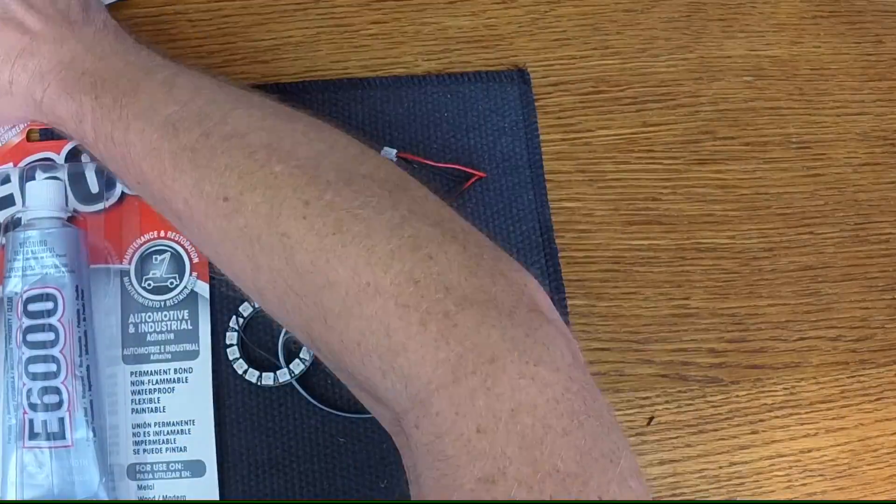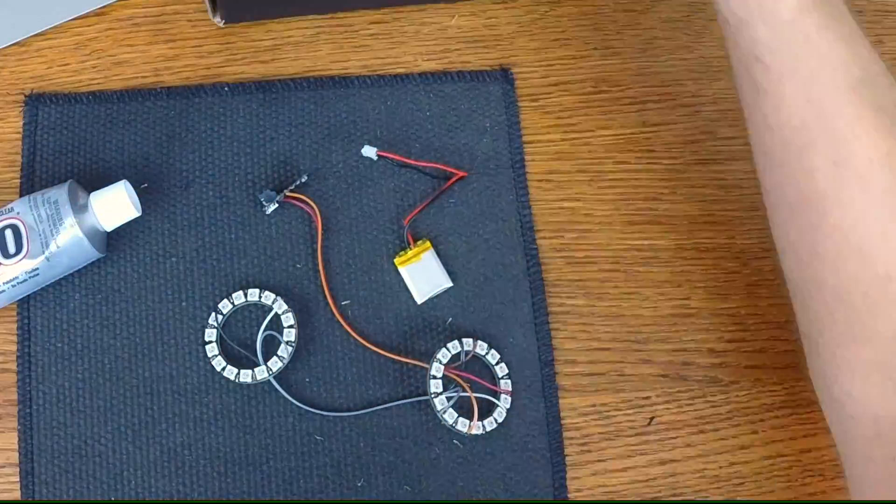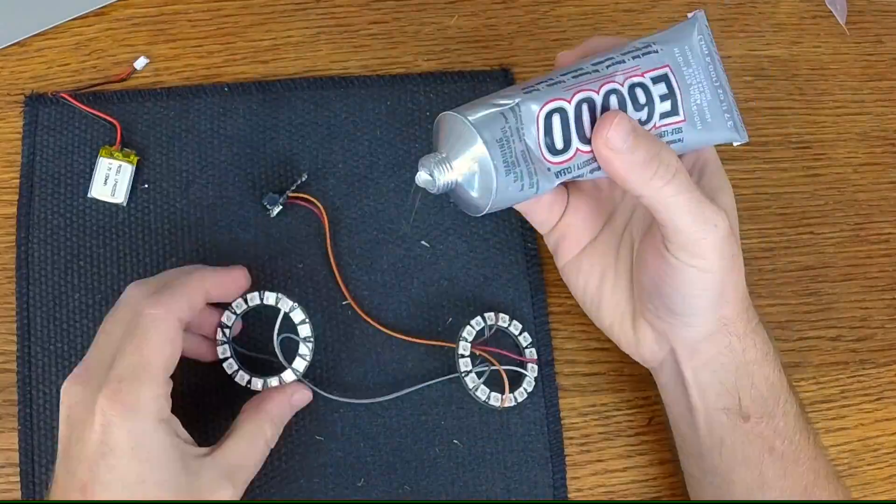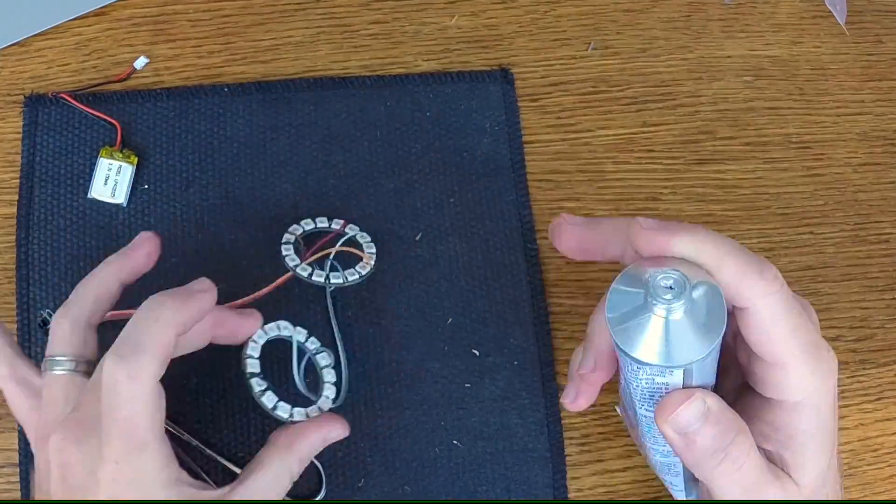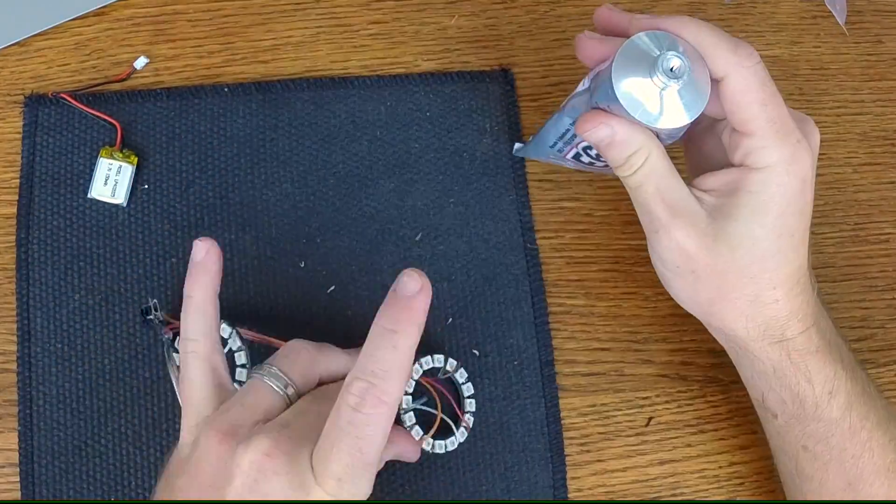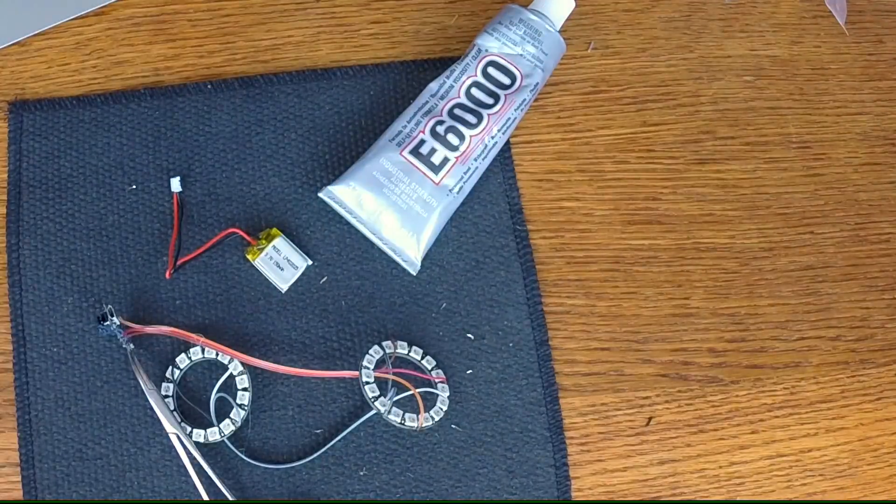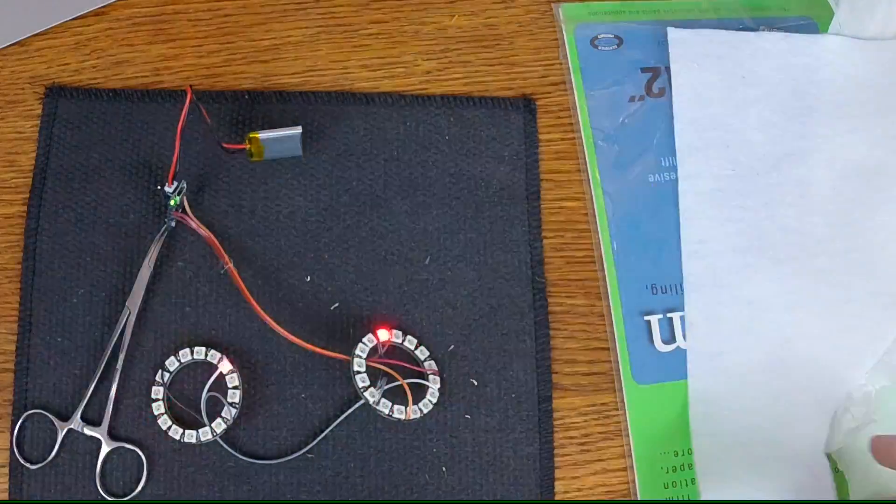There's two different types of glue I'm going to be using. One is E6000 adhesive, which is recommended from Adafruit to help provide some strain relief on the battery pack and on the different wired connections. Because these are wearables, they're going to be moving around, it helps keep the wire from wearing out.